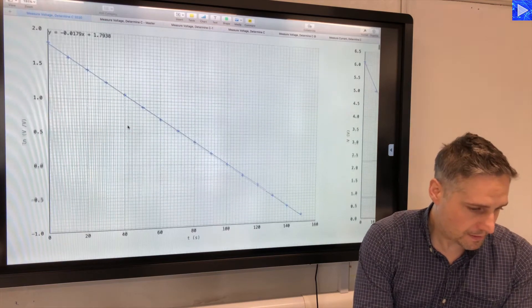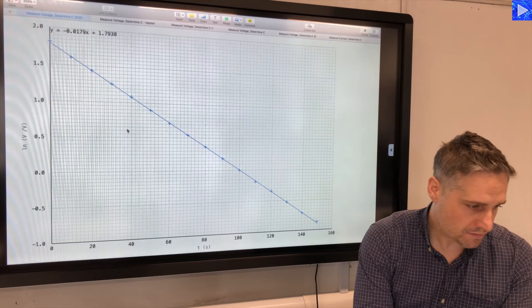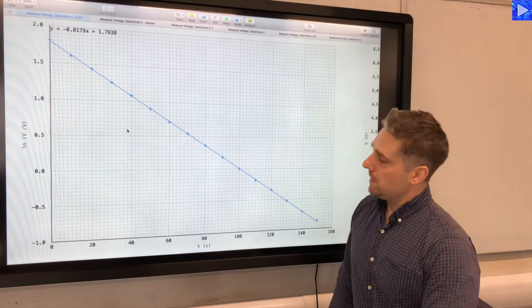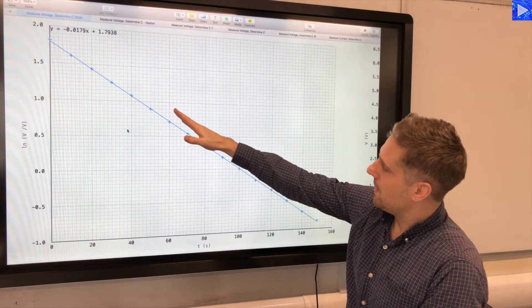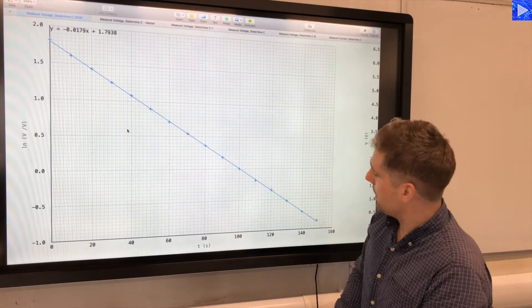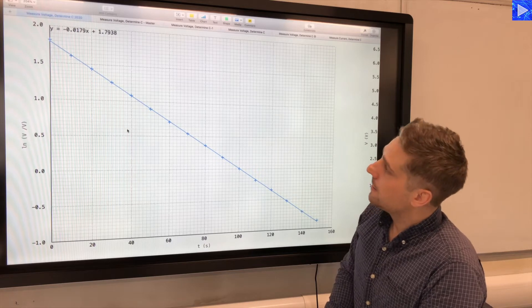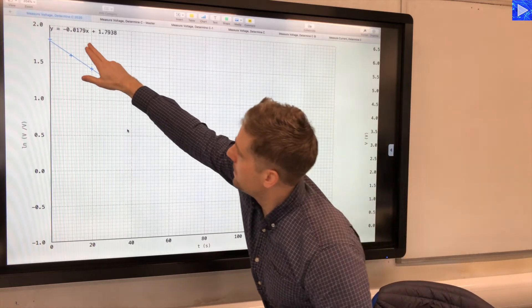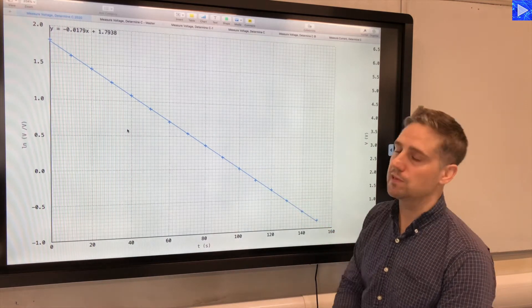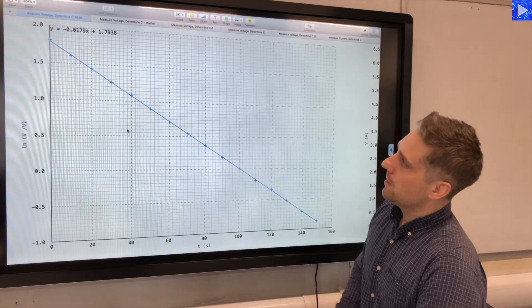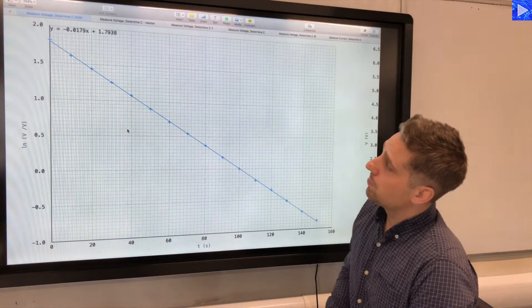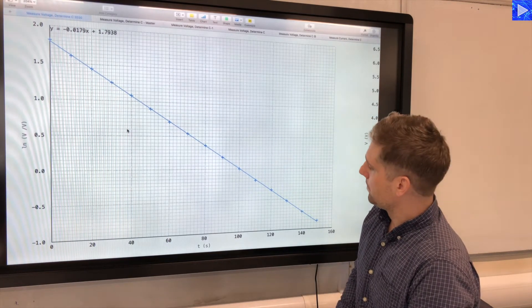So let's have a look at the graph. This is the natural log graph to begin with, since that's the preferred method of calculating c. So there's our graph, it's quite a nice straight line there. All the data plots are close to the straight line of best fit, so that's great. And we have the gradient shown here as minus 0.0179, it's a negative gradient, as you can see, it's going to give us a positive value of rc, which it would be weird if it was negative, wouldn't it? And the y-intercept is plus 1.7938.